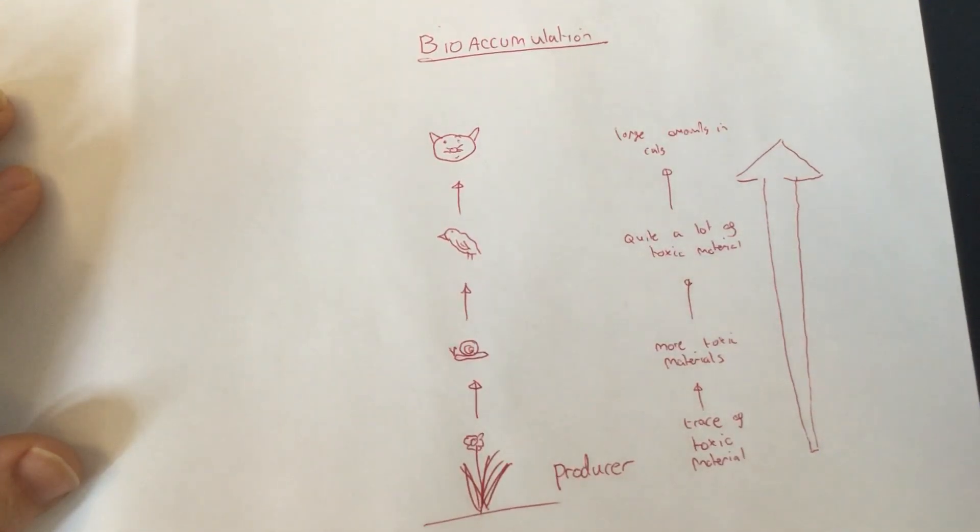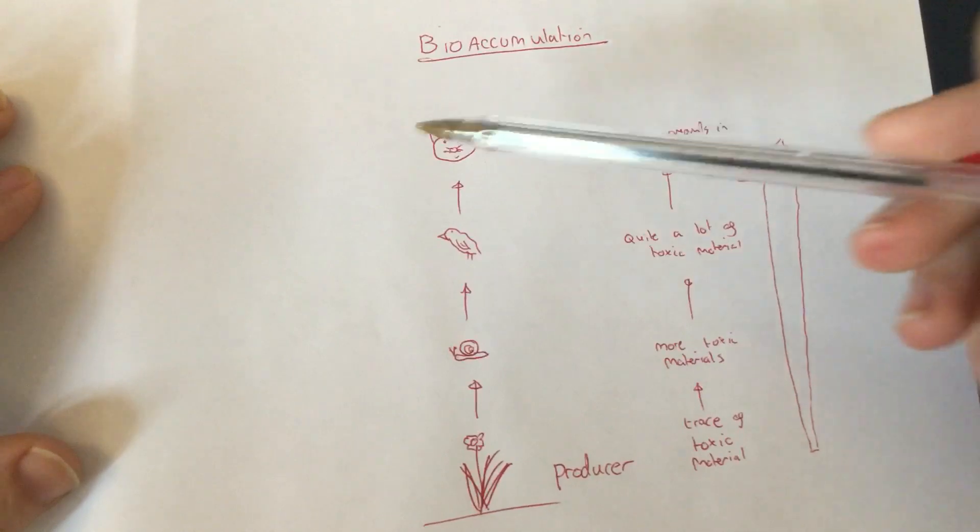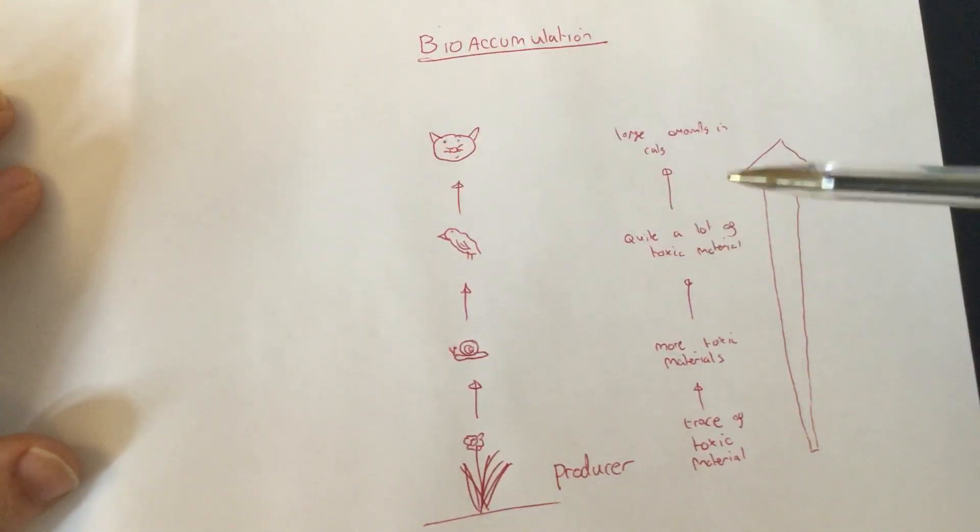This is why it's so dangerous for the top predators in the food chain, because the toxins build up and it kills them.